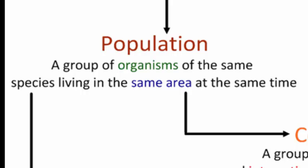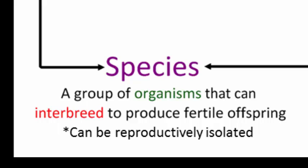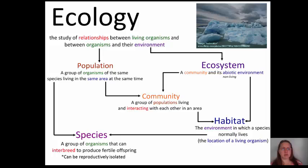What's a species? A species is a group of organisms that can interbreed to produce fertile offspring. Note that species can be reproductively isolated — separated by a barrier — but still be of the same species, because if they could get together, they could interbreed and produce fertile offspring. The address where a species lives is its habitat, or the environment in which it lives. You take several species together in one area and that's a population.